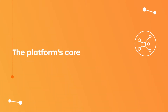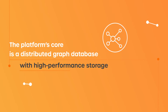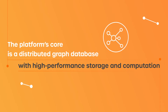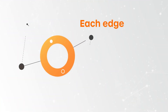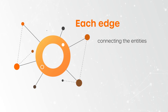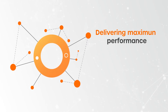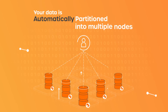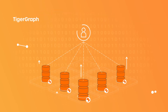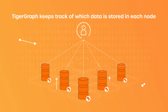The platform's core is a distributed graph database with high performance storage and computation. Each entity and edge is a computational unit delivering maximum performance. Your data is automatically partitioned into multiple nodes and TigerGraph keeps track of which data is stored in each node.